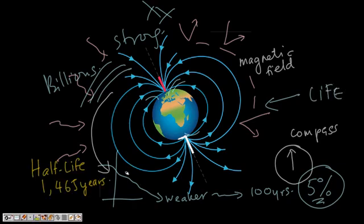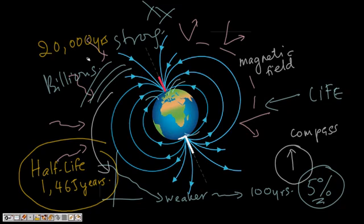In fact, the total energy stored in the earth's magnetic field is decreasing with a half-life of 1,465 years. At this rate, the field could not be more than 20,000 years old.